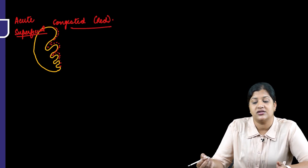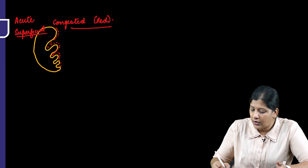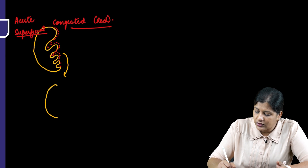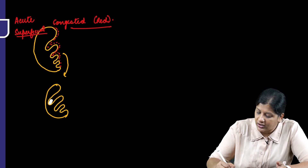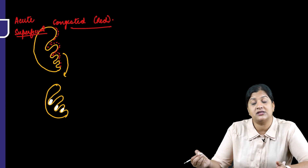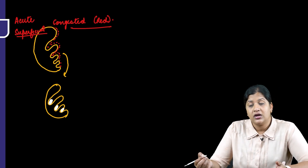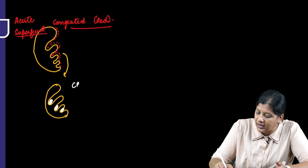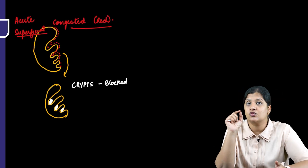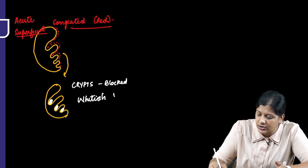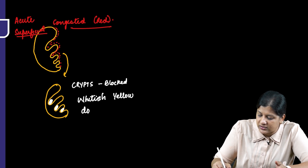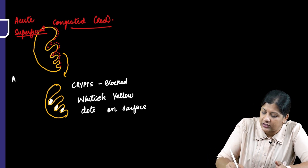The tonsil is red and congested but not enlarged. Eventually the crypts get infected and there is blockage of the crypts with pus, debris, bacteria, and exudates. When the crypts are blocked, you will see whitish-yellow dots on the surface of the tonsil. This type is called acute follicular tonsillitis.